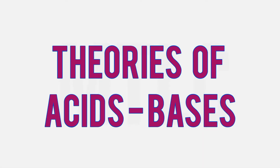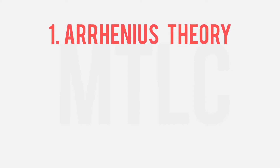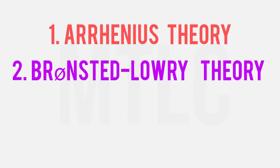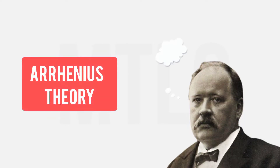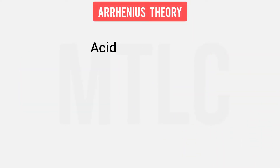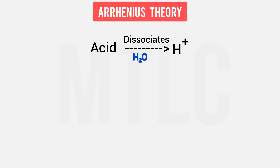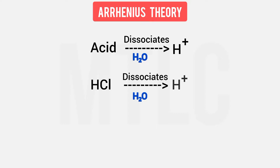There are three theories of acids and bases. The first is Arrhenius theory. According to Arrhenius, an acid will dissociate to give hydrogen ions — for example, HCl dissociates to give H⁺ ions.